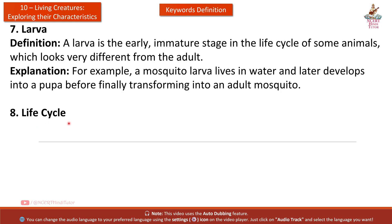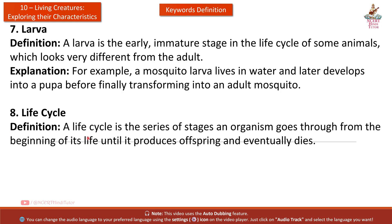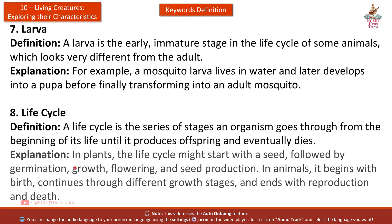Eighth: Life Cycle. Definition: A life cycle is the series of stages an organism goes through from the beginning of its life until it produces offspring and eventually dies. Explanation: In plants, the life cycle might start with a seed, followed by germination, growth, flowering, and seed production. In animals, it begins with birth, continues through different growth stages, and ends with reproduction and death.